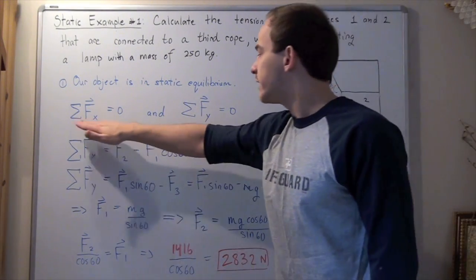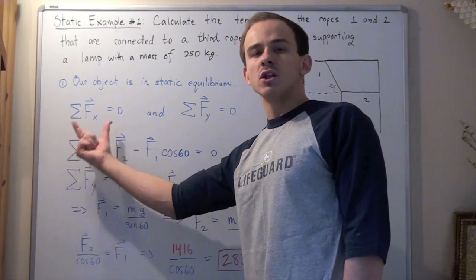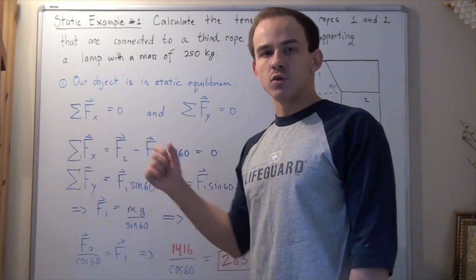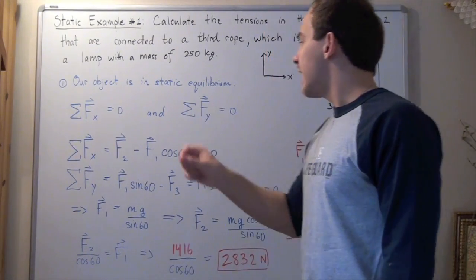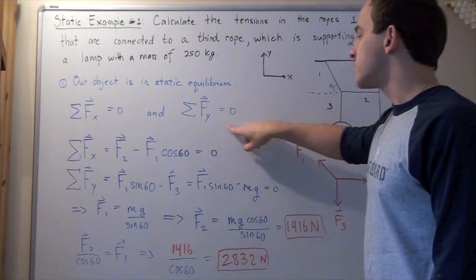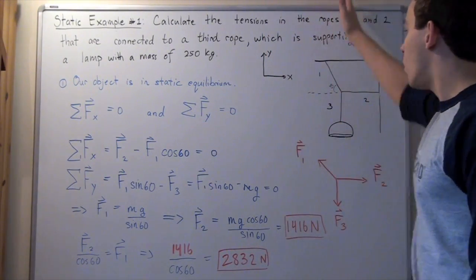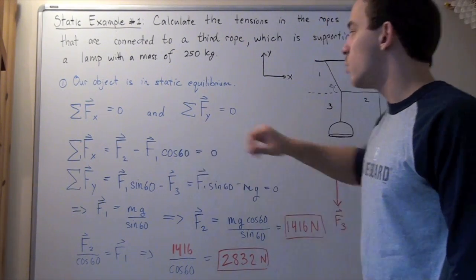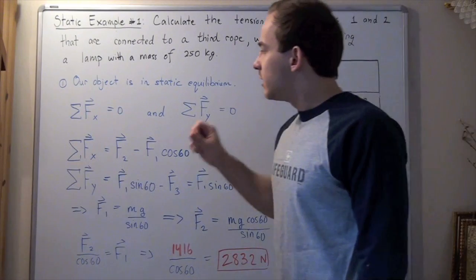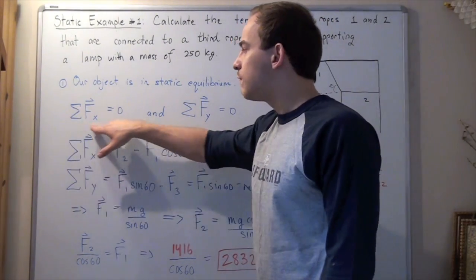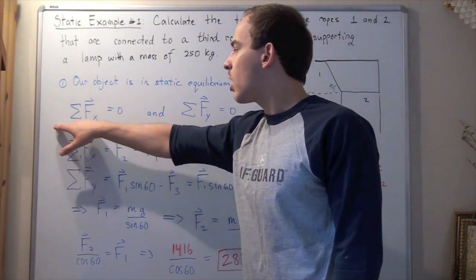We can write the following two formulas: the sum of all the forces along the x-direction acting on this object is zero. Likewise, the sum of all the forces acting on our object, the lamp, along the y-direction is also zero. Let's begin by looking at all the forces along the x-axis, along our horizontal.